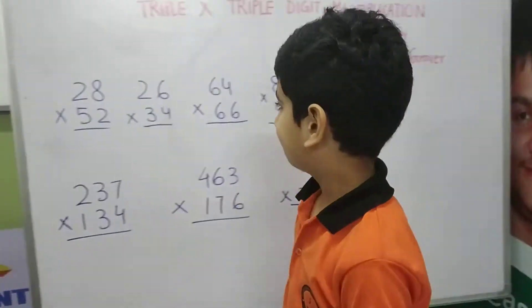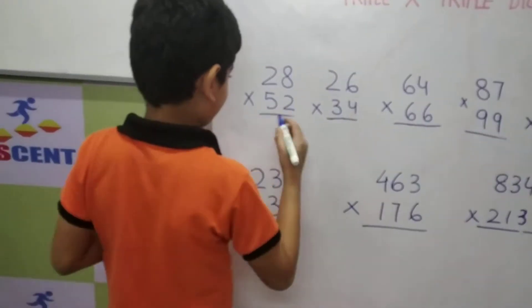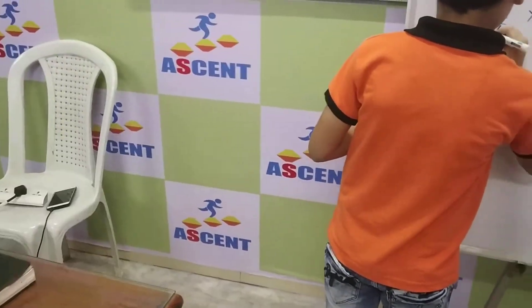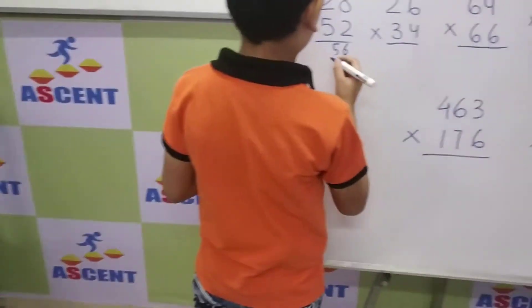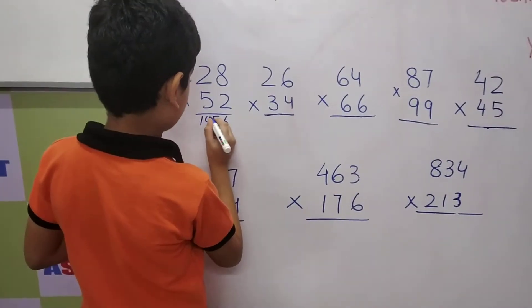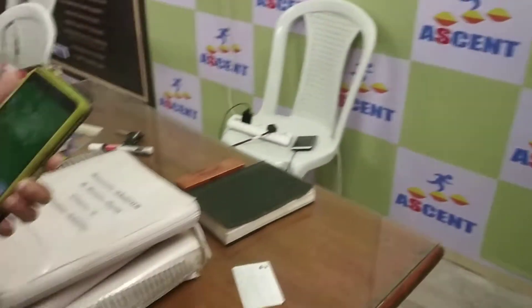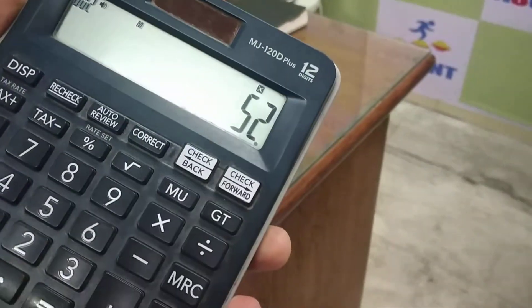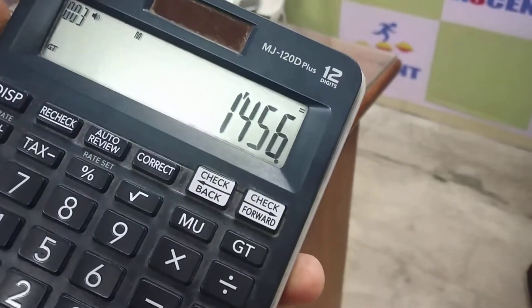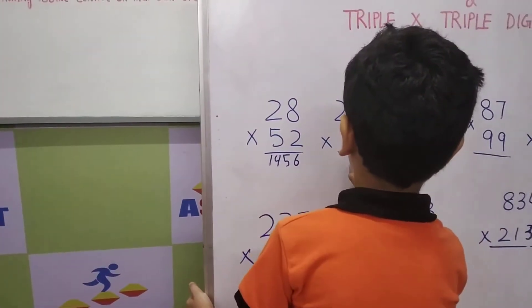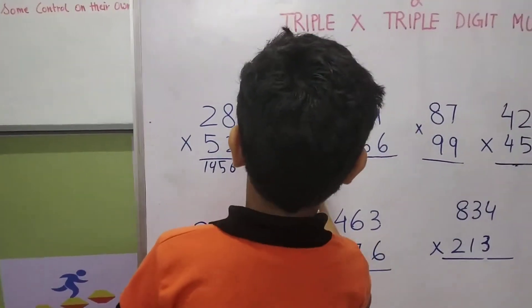Start, Yejas. There is no such time limitation for him, but we are still timing him. The first question that comes to him is 28 into 52. 28 into 52, the answer is 1456. So this is the answer. Right, 1456.